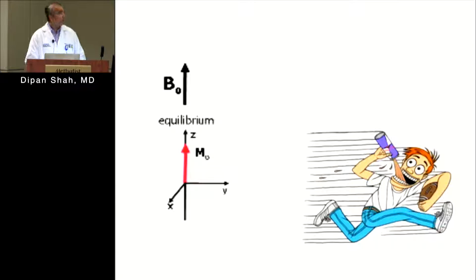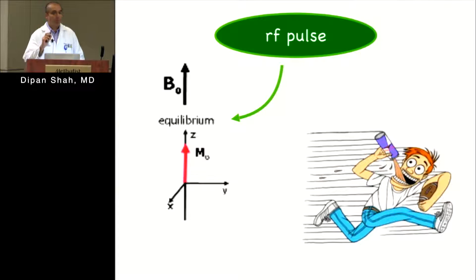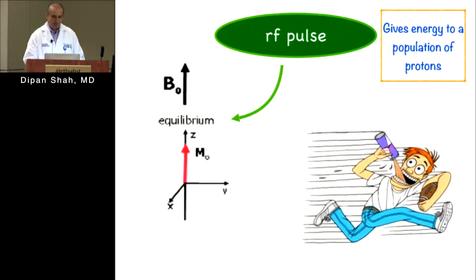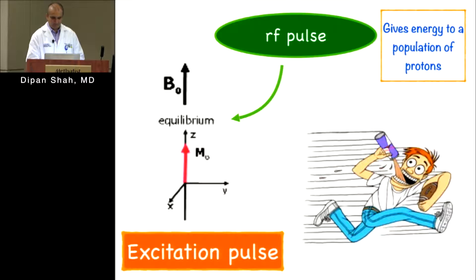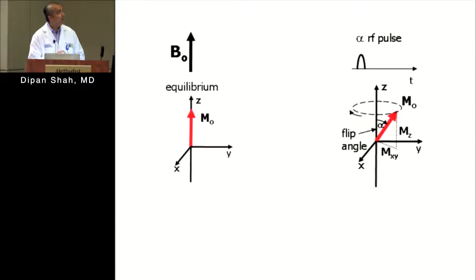The next aspect is that we transmit a radio frequency pulse to cause excitation. That RF pulse gives energy to the protons, which absorb it and move from their upright resting state into the transverse plane. This is called a flip. The protons go from being upright to being in the transverse plane — defined as the Y-axis — and this is called an excitation pulse.